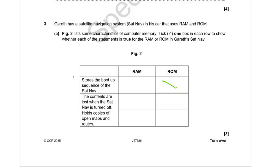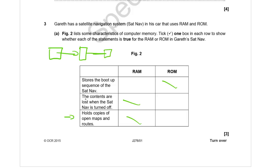RAM loses its contents when the sat nav is turned off. It holds copies of open maps and routes because when you open a program, it gets copied from secondary storage (like a hard disk) into RAM, which is directly connected to the processor. So the sequence is: the processor copies the operating system from the hard disk into RAM, guided by an instruction from ROM.